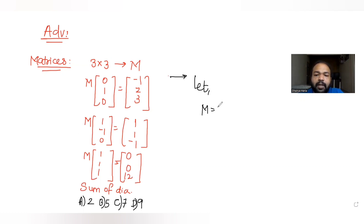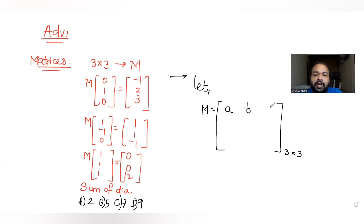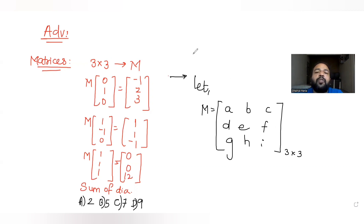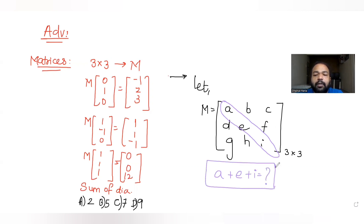Since M is a 3×3 matrix, there are three rows and three columns, giving nine elements in total. Let's label those nine elements as a, b, c, d, e, f, g, h, i. The diagonal elements are a, e, and i, so I need to find the sum of a, e, and i.